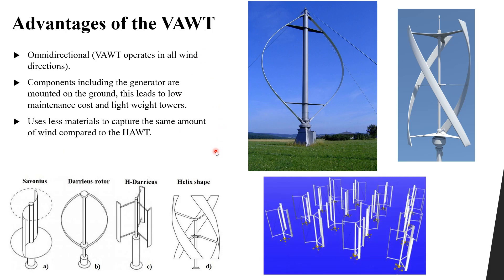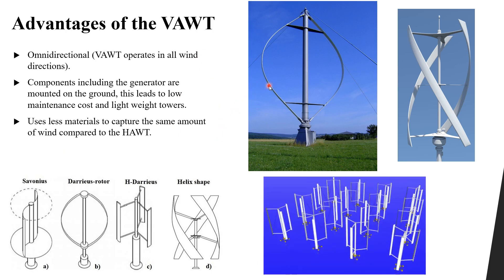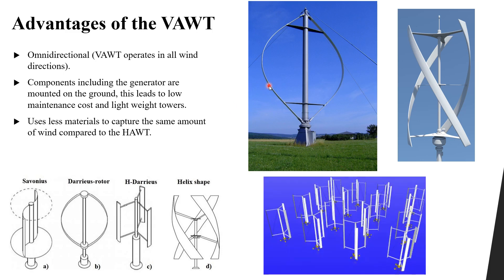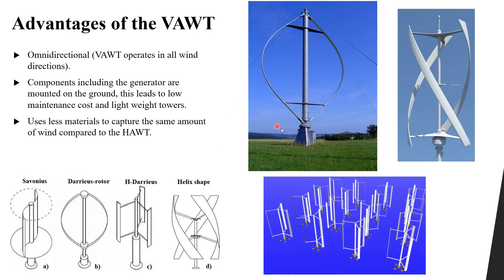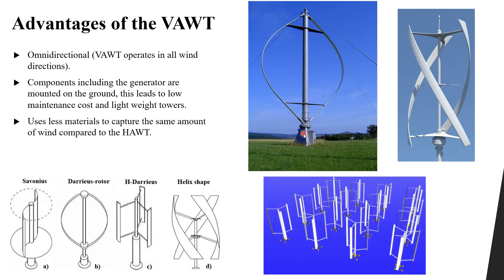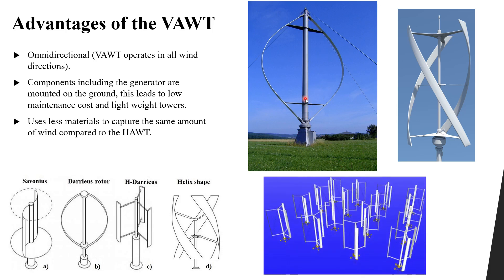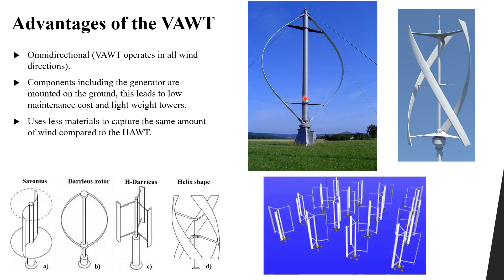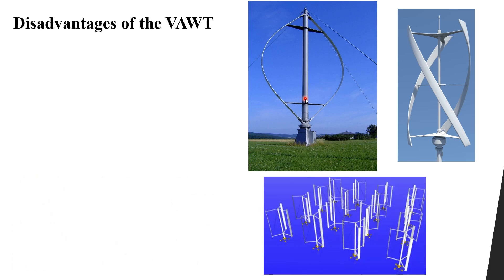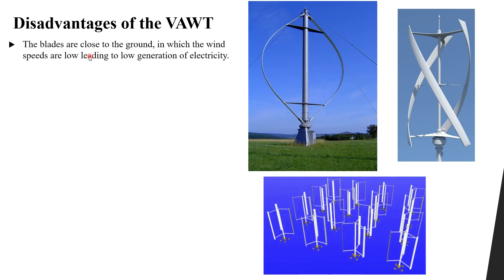Finally, it uses less material to capture the same amount of wind compared to the horizontal axis wind turbine. So the advantages are: it operates in all wind directions, it has low maintenance cost since the generator is on the ground, the tower is lightweight, and less material is needed.